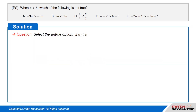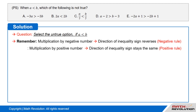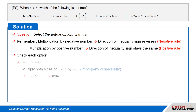We are required to select the option that will not be true when a is less than b. Do not forget that the direction of the inequality sign is reversed if a negative number is multiplied to both sides, which is the negative rule inequality, whereas the direction stays the same if a positive number is multiplied to both sides, which is the positive rule inequality. Let us check each option.